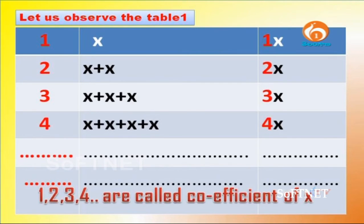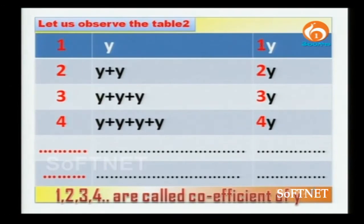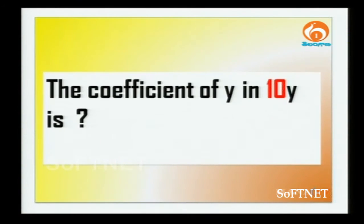These numbers 1, 2, 3, 4 are called coefficients of x, where x is the variable and the coefficients are changing based on the number of x. For example, the coefficient of x in 5x is 5. Similarly, looking at the table for y: 1y, 2y, 3y, 4y — the numbers 1, 2, 3, 4 are the coefficients of y. The coefficient of y in 10y is 10.